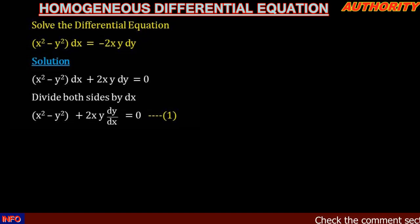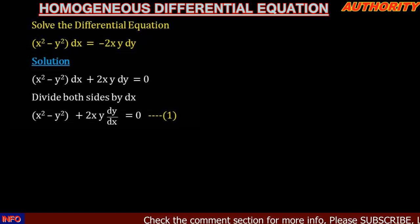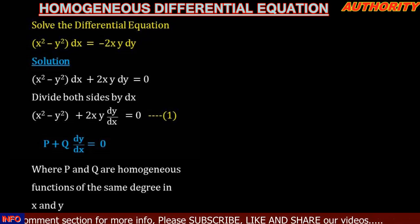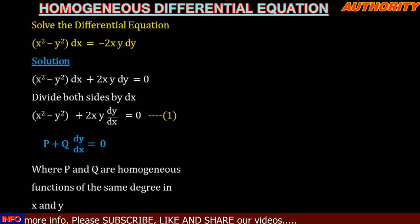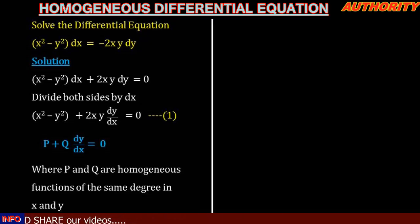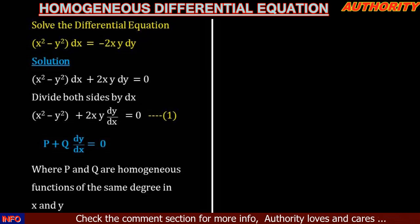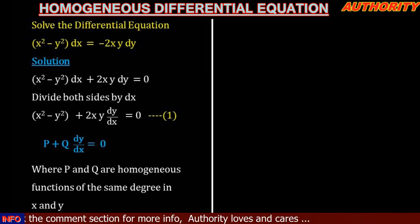Now, when we have a homogeneous differential equation, how does it look? For a differential equation to be called homogeneous, it should be in the form P plus Q dy/dx equal to zero, where P and Q are homogeneous functions of the same degree in x and y. When it is in this form, the equation is called a homogeneous differential equation and it can be solved using its own approach.